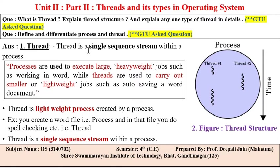Thread is a single sequence stream within a process. Processes are used to execute large, heavyweight jobs — for example, working in a word file is the big job. Threads are used to carry out smaller or lightweight jobs — for example, spell check, text formatting, and auto-saving a word document are all threads.